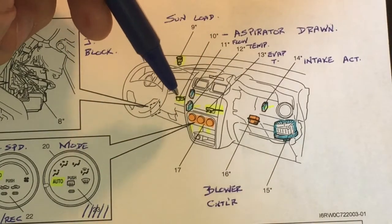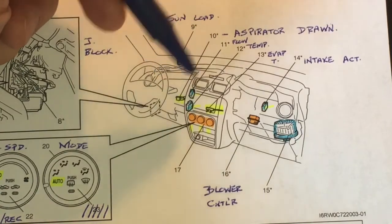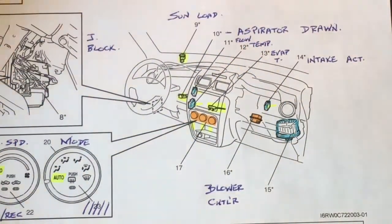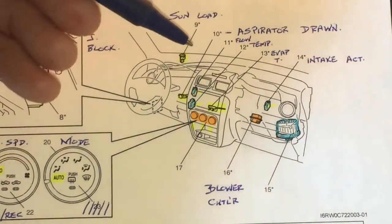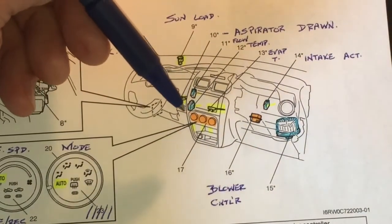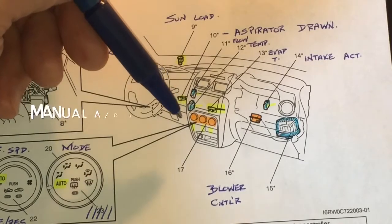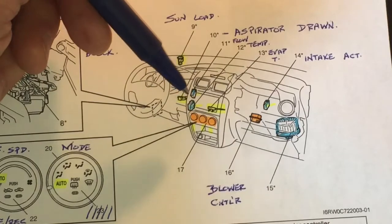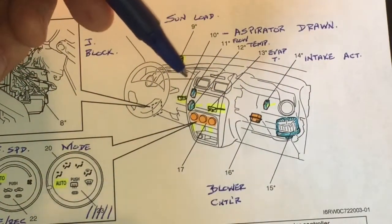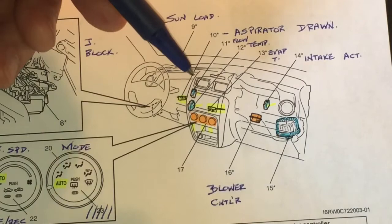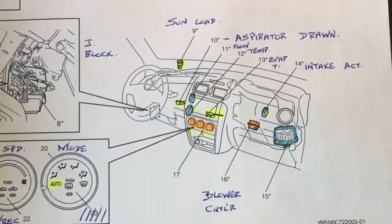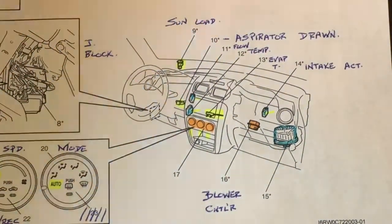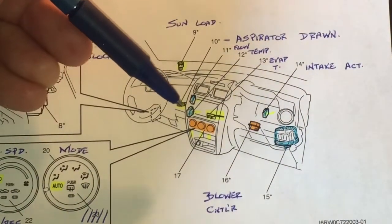We've got three actuators shown in blue here. Unlike in the manual system where basically you use cables or linkages in order to move the dampers that are in the distribution plenum itself, in a climate control system typically they're electric actuators. There's a couple different types of actuators that are actually out there - there's stepper motors, some systems actually are even mechanical, they can use vacuum. In the case of the SX4, it's just a bi-directional DC motor with a potentiometer for feedback purposes.